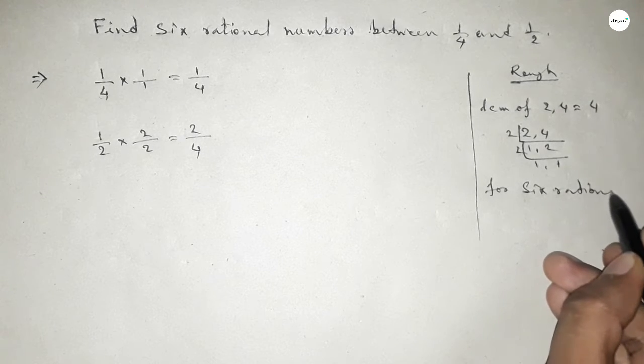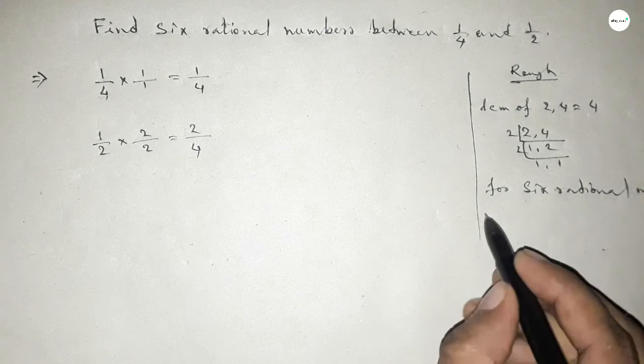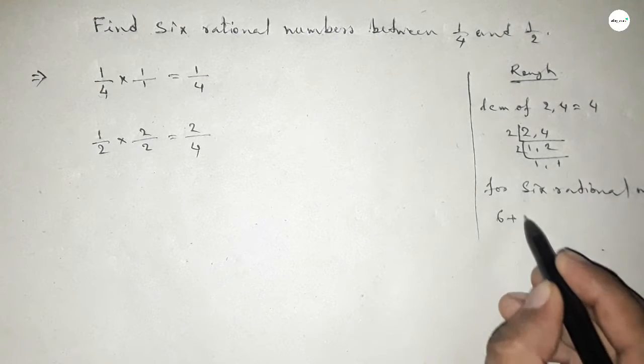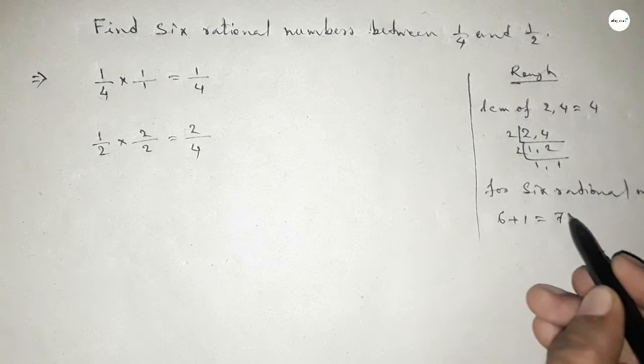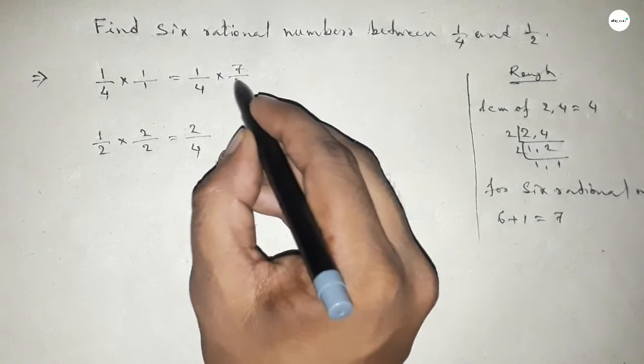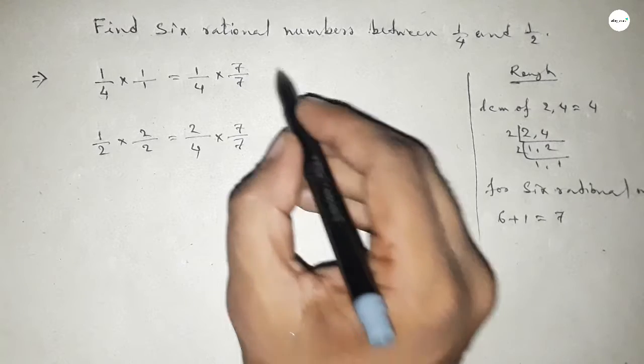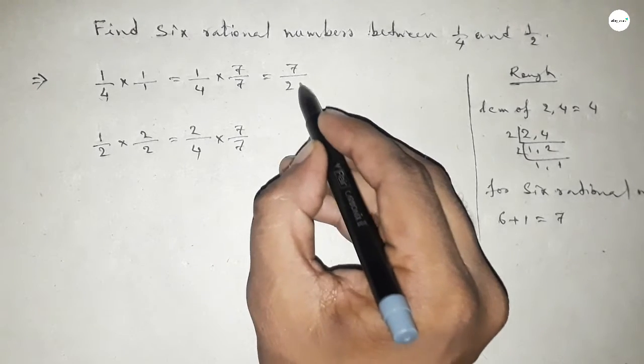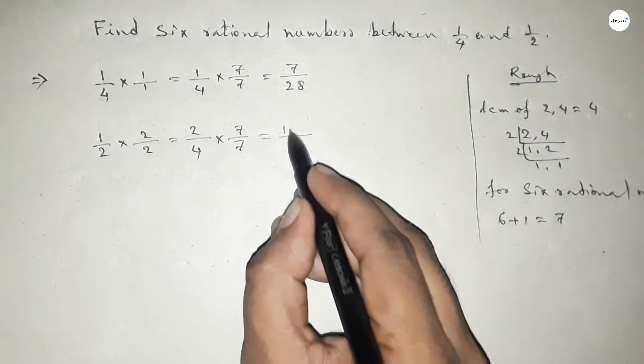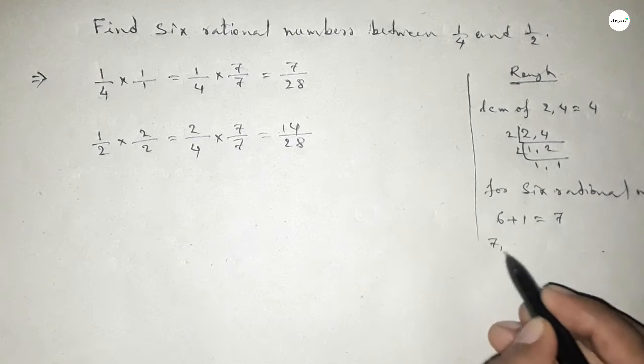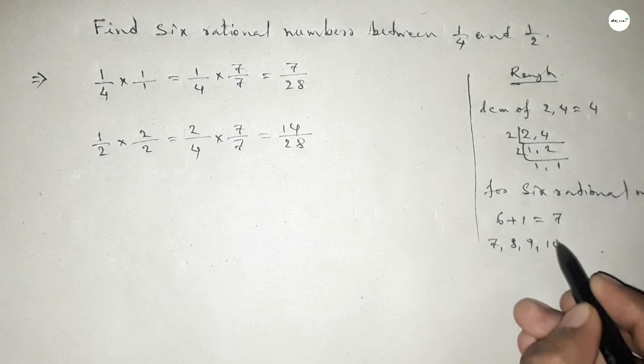Now for finding six rational numbers between any two numbers, we have to follow this method. We should multiply by 6 plus 1 equal to 7 with both numbers. So this is 7 over 7, here also 7 over 7. Now this is 7 over 28 and this is 14 over 28.